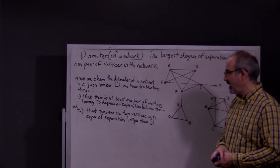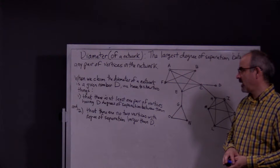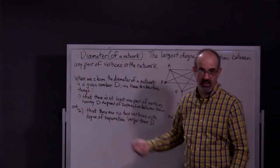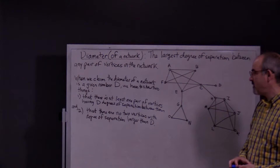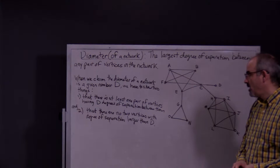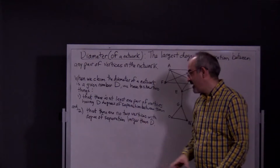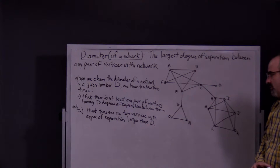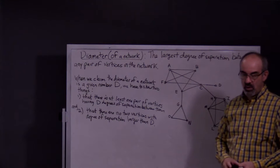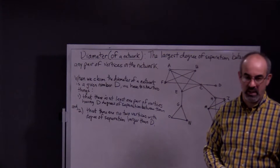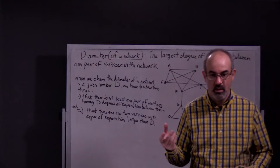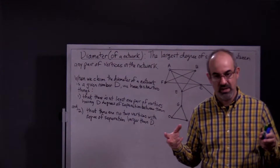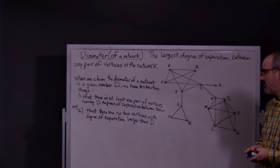When we claim the diameter of a network is a given number D — D stands for diameter — we have to show two things. One, that there is at least one pair of vertices having D degrees of separation between them. So if you say the diameter of a network is four, there has to be at least a pair of vertices that has that degree of separation between them.